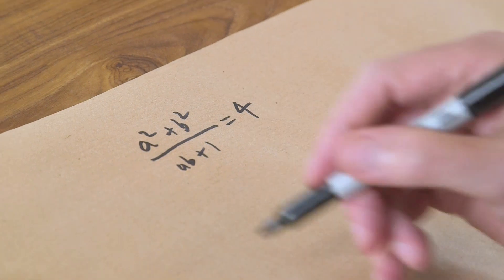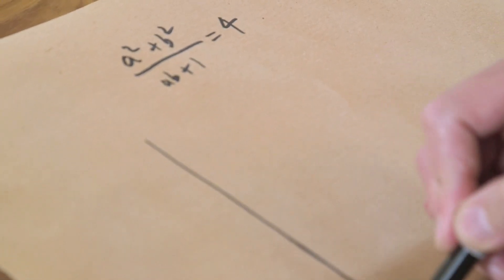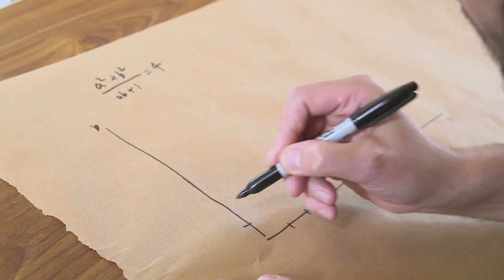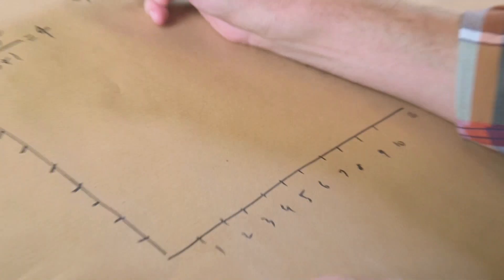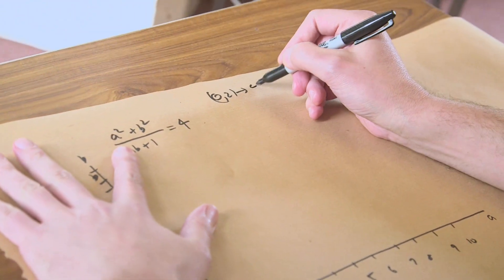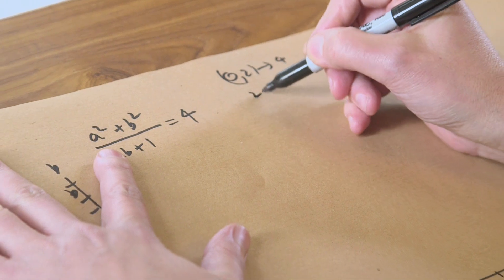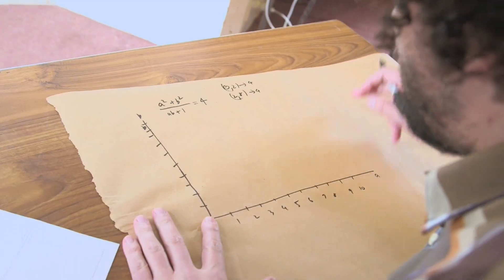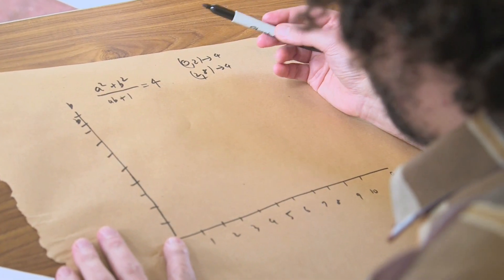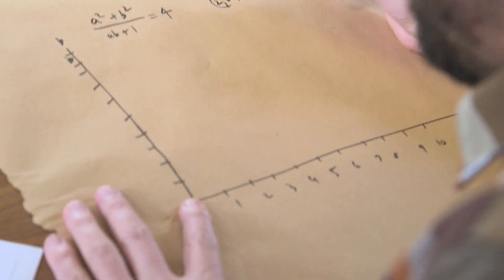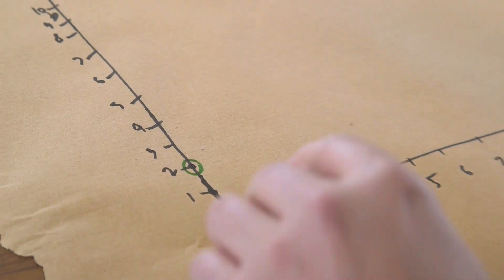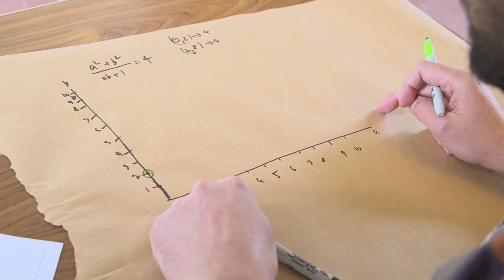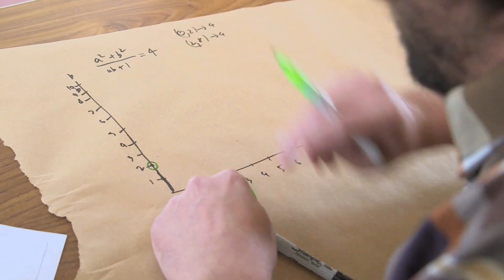So they looked at the equation for a squared plus b squared on ab plus 1. And they looked at it just for one of those solutions. So I'm going to choose 4. And so now what they did was they actually graphed. They graphed the solution. So here we've got a, and here we've got b. Okay, so now they looked at the two solutions they had. 0 and 2, if you stuck that in there you get 4. So that's a solution, 0 and 2. And also 2 and 8 were another solution that gave you the 4.